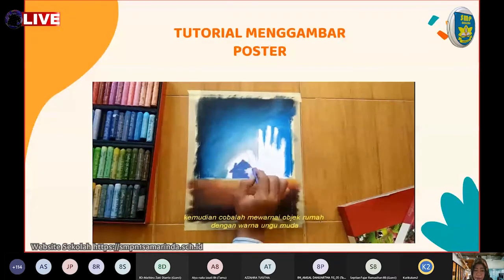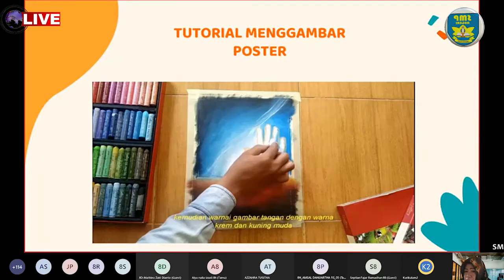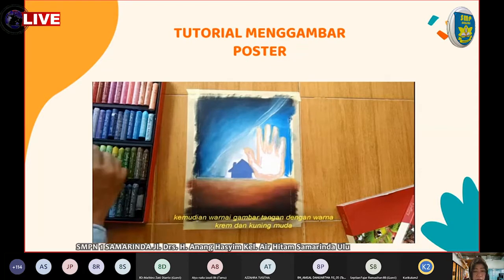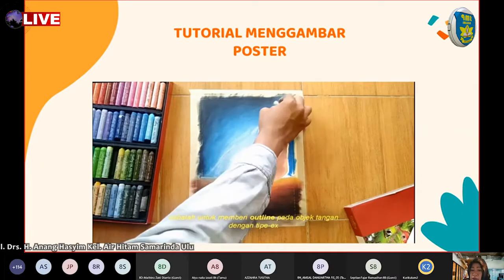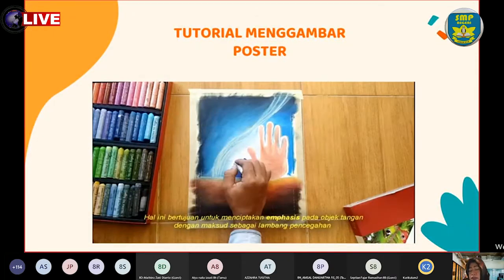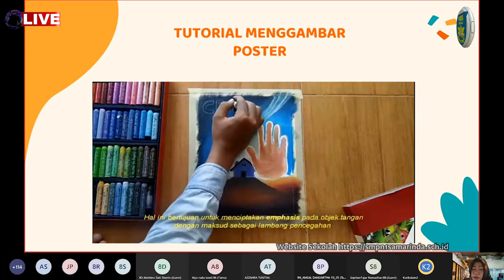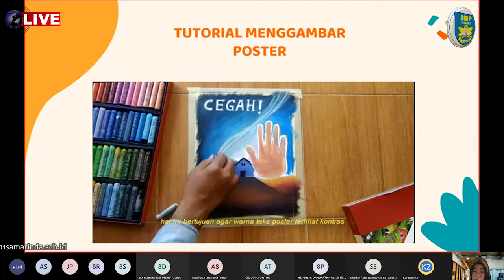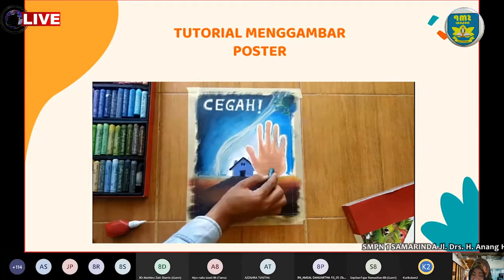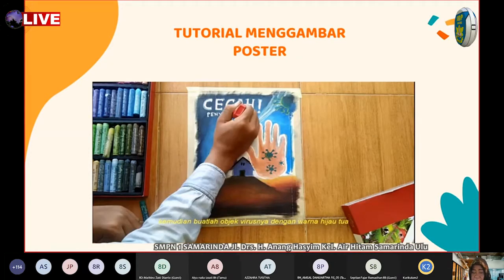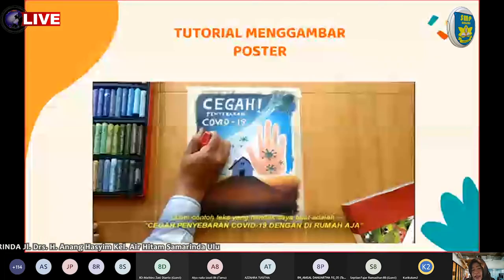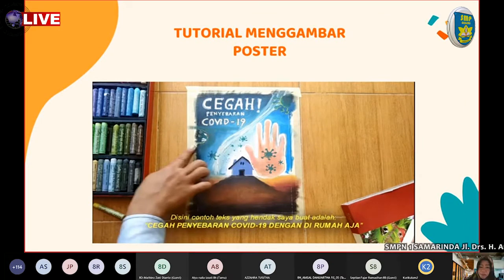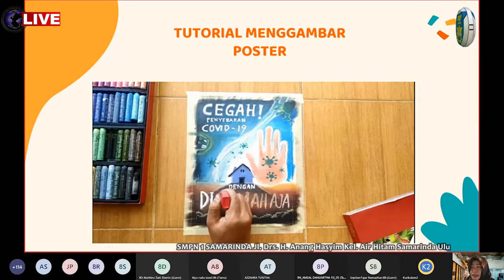Kemudian warnai objek rumah dengan warna ungu muda. Warnai gambar tangan dengan warna kuning muda, atau warna yang biasa digunakan untuk warna kulit. Cobalah memberi outline pada objek tangan dengan tip-X untuk menciptakan emphasis pada objek tangan sebagai lambang pencegahan. Kemudian buat tulisan poster dengan tip-X agar warna teks terlihat kontras. Buat objek virusnya dengan warna hijau tua. Contoh teks yang dibuat adalah 'Cegah penyebaran COVID-19 dengan di rumah aja'.